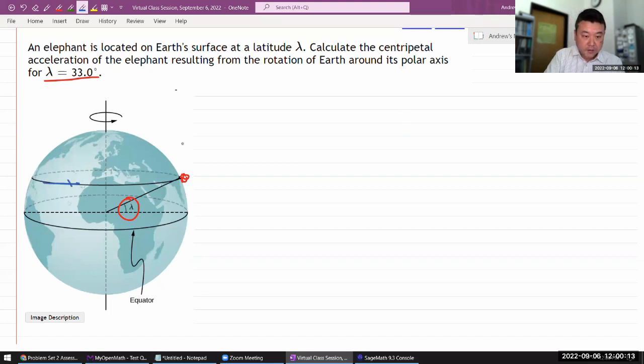I can treat this like a uniform circular motion of this radius. So all I really need to figure out is acceleration of this elephant towards the axis, just directly towards the axis, not towards the center of the Earth, towards the axis, making this uniform circular motion at the radius r.